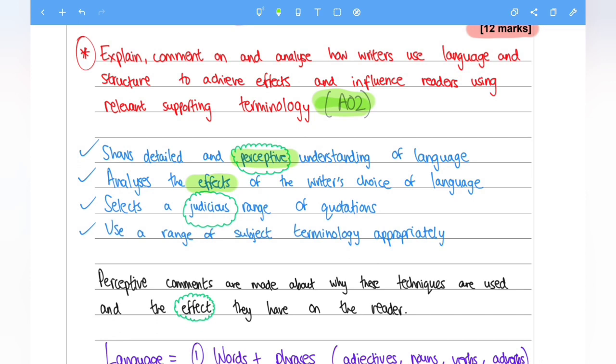Next up, selects a judicious range of quotations. Very important, a judicious range. This means you have to be very selective with your quotations. Do not just pick out any random quotes. Make sure you are very selective and you choose quotations that are best suited to answer the question.